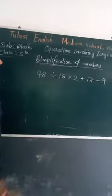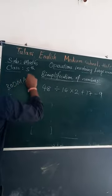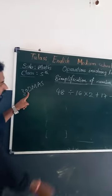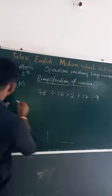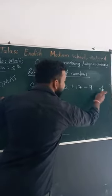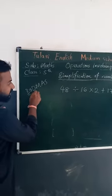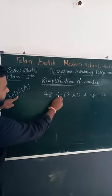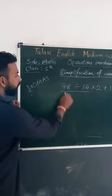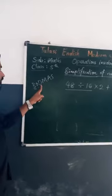In this problem, is there any bracket? No. Is there any Of? Not there. Is there any division symbol? Yes, it is. So we have to go for division first. 48 divided by 16 — division comes first, before multiplication, then addition, then subtraction.